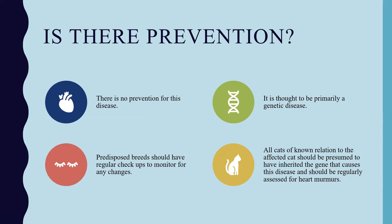There is no prevention for this disease, as it is primarily genetic. Owners of predisposed breeds should have regular checkups to monitor for any changes. If there is any known relation to an affected cat, it should be presumed the animal has inherited the gene, and they should be regularly assessed for heart murmurs. Known patients should not be bred — they should be spayed or neutered so as not to pass on the disease.